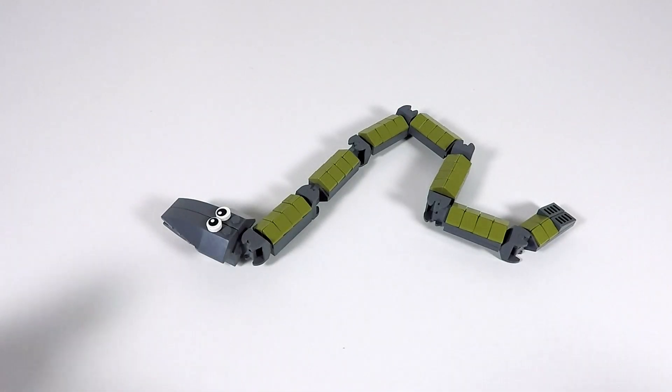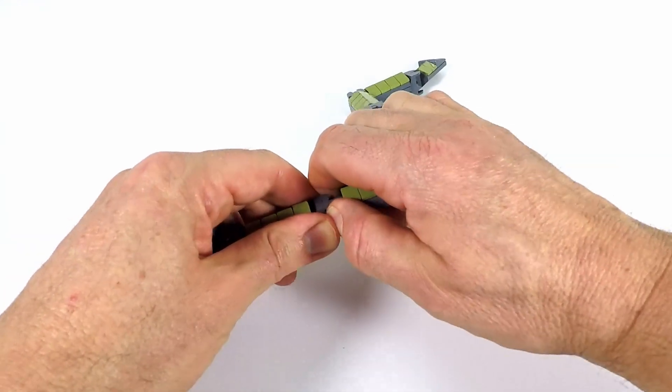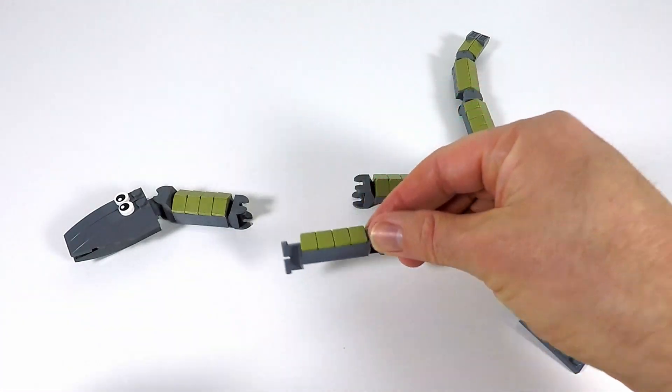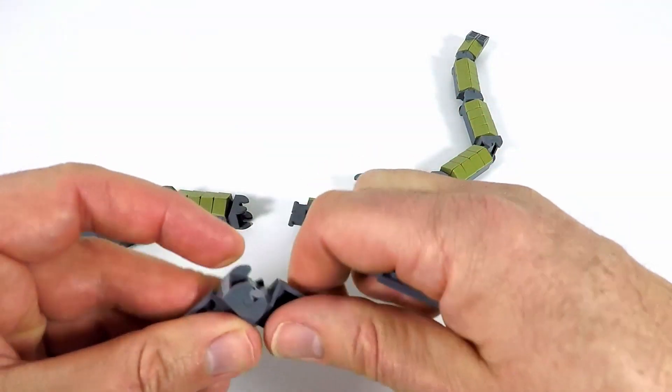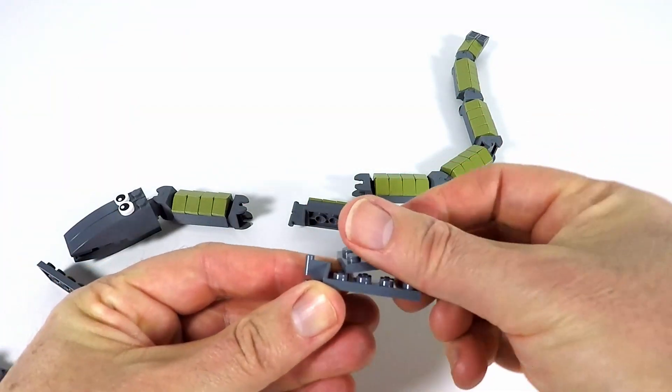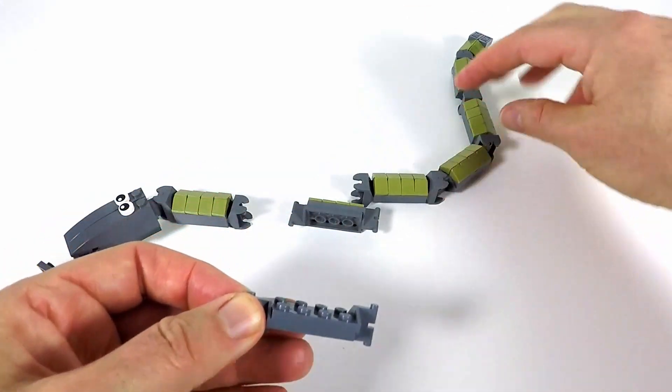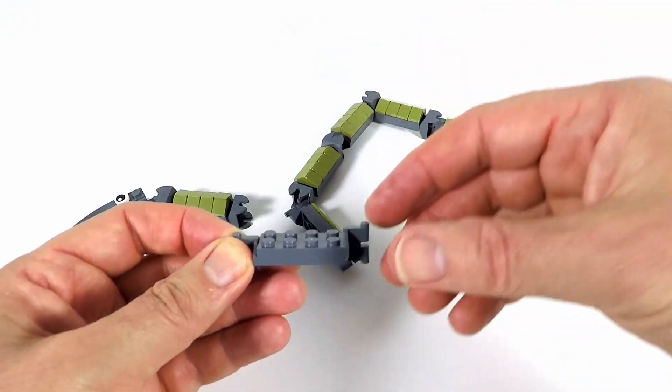Okay, making this articulated snake is pretty easy. We'll just take off some of these pieces here. Now each part of the snake has just two of these plates joined together. So we pop them on like that and you want to alternate them between up and lower just to make sure that the snake doesn't get too high off the ground.